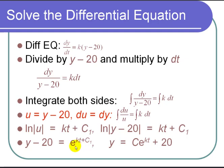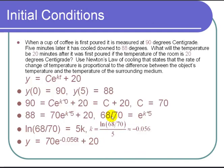And one more little trick. If you have e to the kt plus c1, that's the same as e to the kt times e to the c1. And if c1 is a constant and e is a constant, then e to the c1 is also a constant. Let's call that c. So that gives us y equals c e to the kt plus 20. Now let's continue.